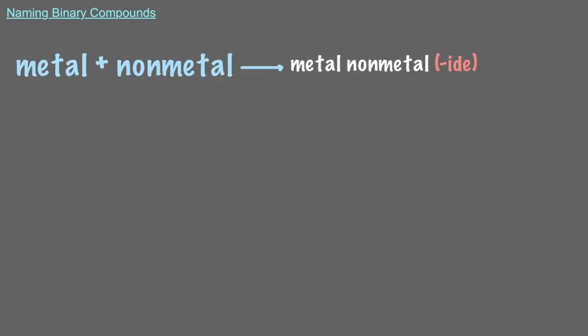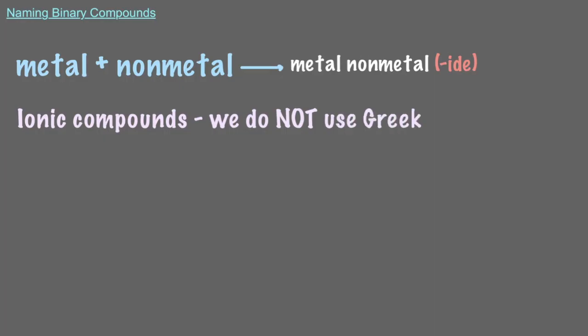Let's move on to the second category. When the two elements that make up a binary compound are a metal and a nonmetal, we start by first writing out the name of the metal. Then, we write out the name of the nonmetal, but change the end of the name to IDE. For these binary compounds of a metal and a nonmetal, also called ionic compounds, we do not use Greek prefixes no matter how many atoms of each element are included.